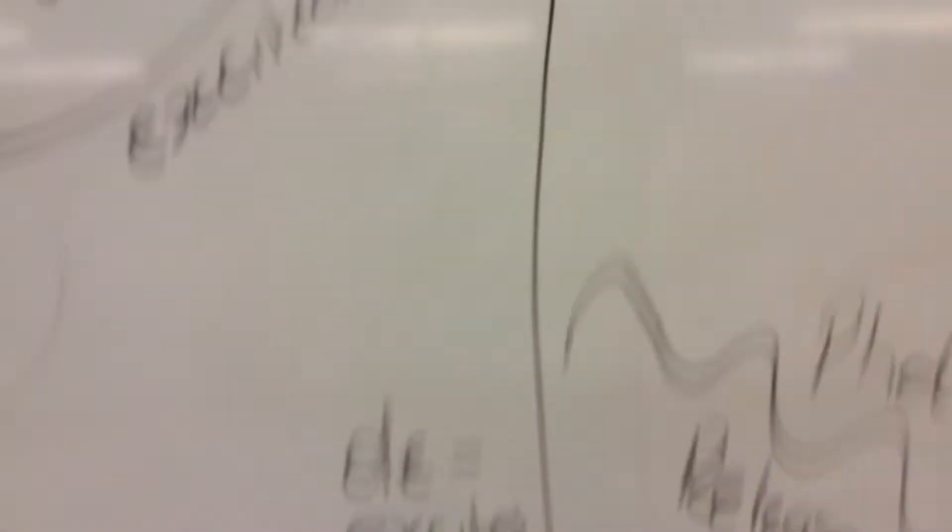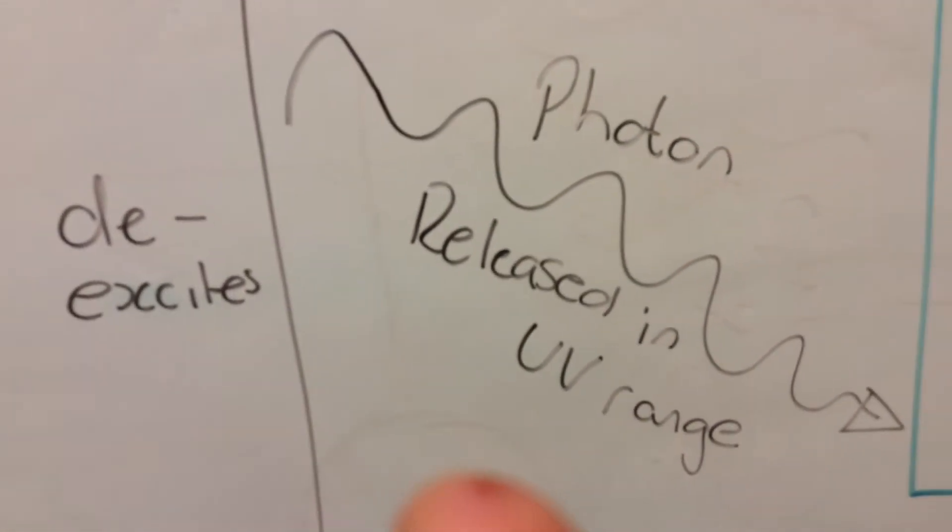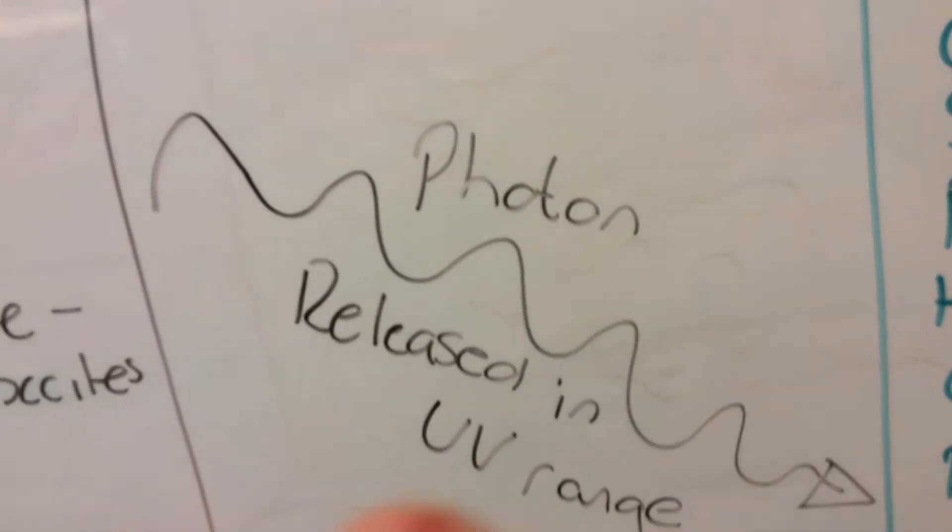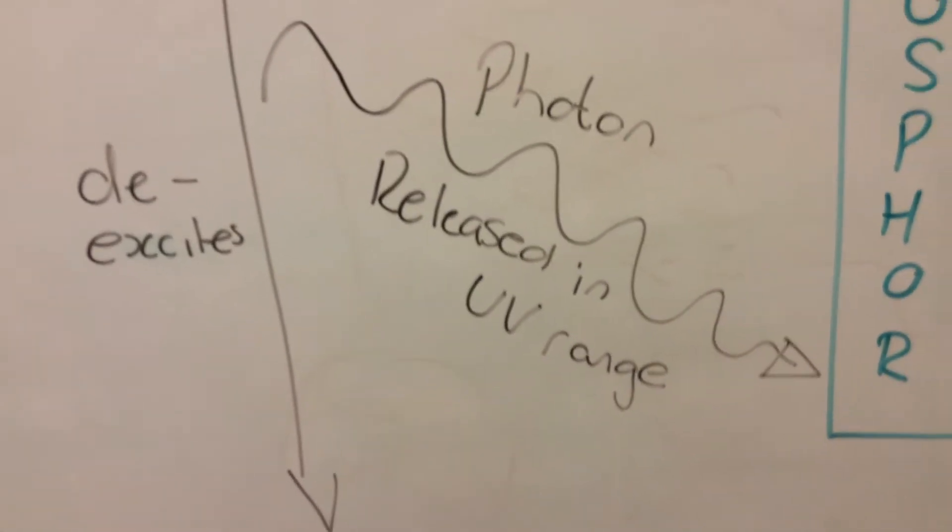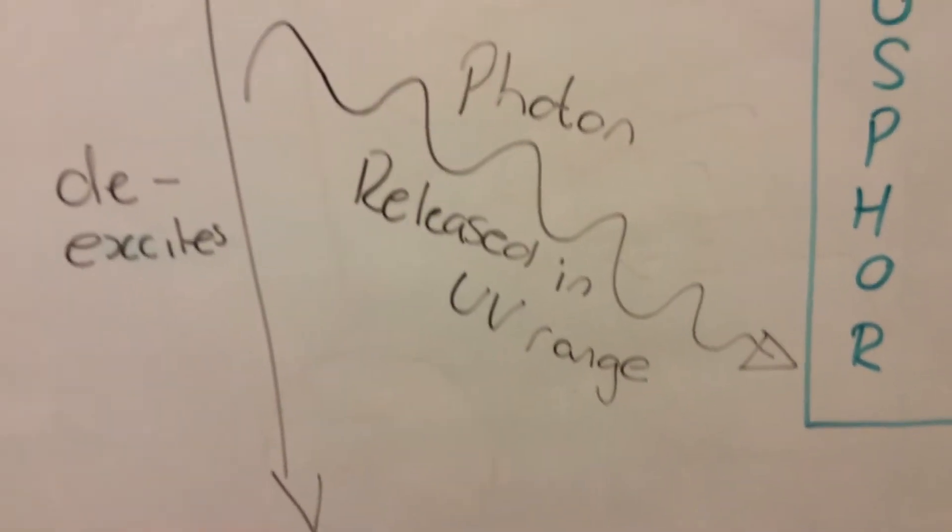So, when that happens, I've got the atom of gas with the excited electron, de-excited, turning back to the ground state, that releases a photon. Now, the photon that's released is very high frequency because it's got quite a lot of energy, it's a high frequency, and it's actually in the UV range.